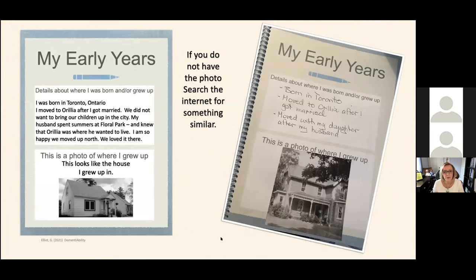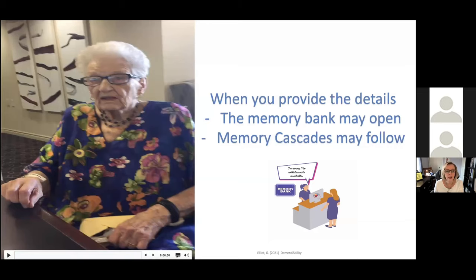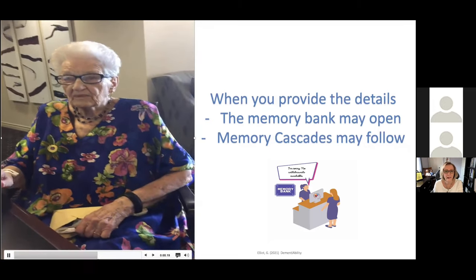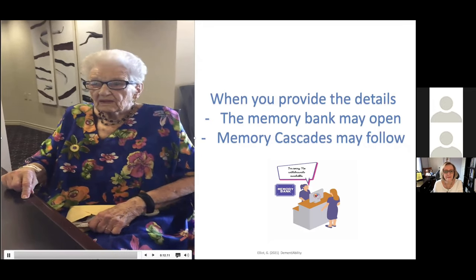Here are examples of early years pages. One person had all the details typed up — they couldn't find a photo but knew they lived in one of the wartime houses, so they searched for 'wartime house' and came up with an image. Another person actually had a picture of the house and wrote it up. When you provide details — showing a picture of where someone grew up — watch what happens: all of a sudden you can see that brain firing, wiring, and sharing information.